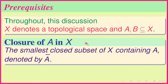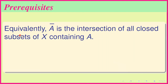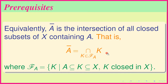The closure of A in X is the smallest closed subset of X containing A, denoted by Ā. Clearly A equals its closure if and only if A is closed in X. Equivalently, Ā is the intersection of all closed subsets K of X containing A.